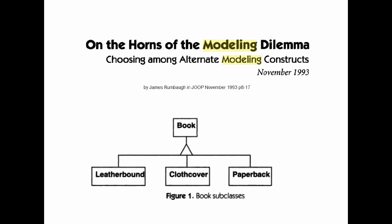I think it's worthwhile mentioning that this problem has been highlighted again by Rambo in his book and also in the original 1993 article in the Journal of Object Modeling and Programming titled "On the Horns of the Modeling Dilemma: Choosing Among Alternative Modeling Constructs." He gives lots of examples, including a nice example of book where you've got a book as a superclass and you've got three subtypes.